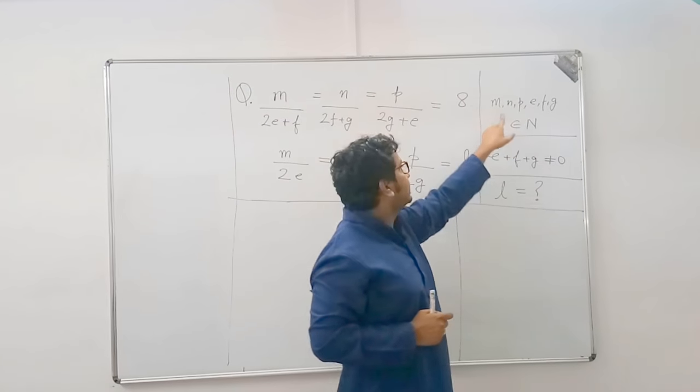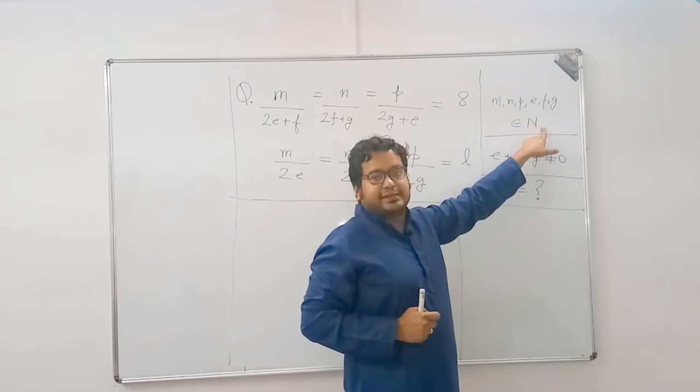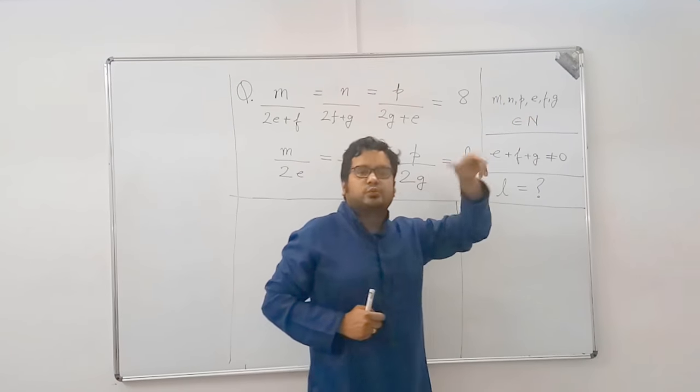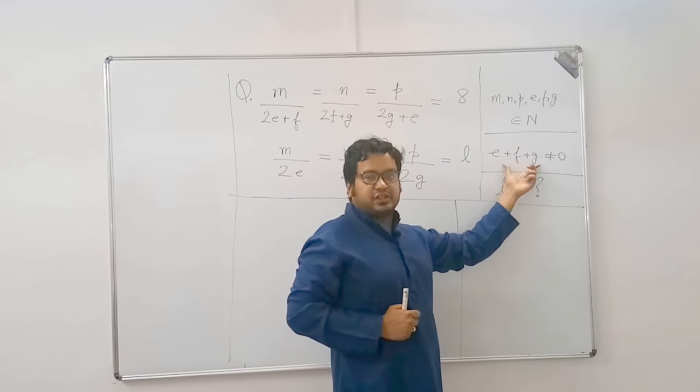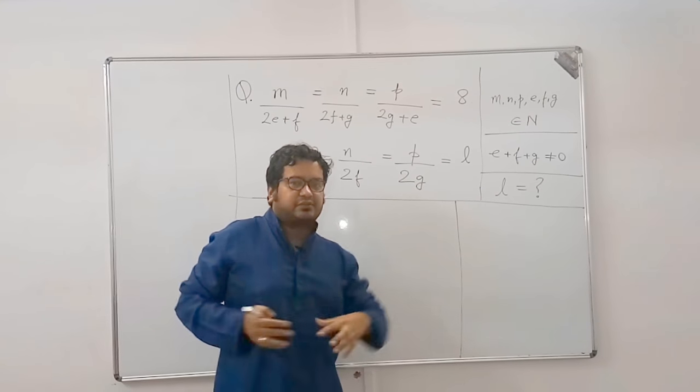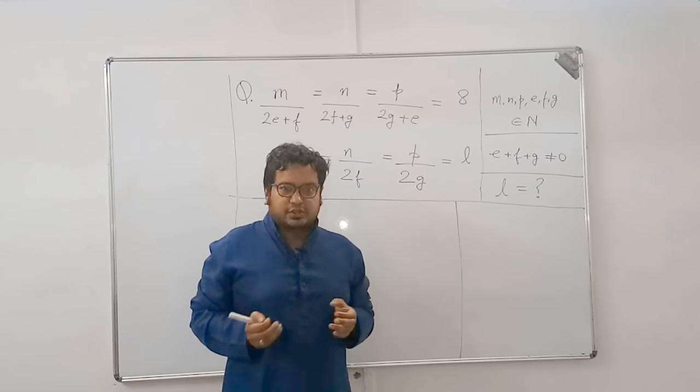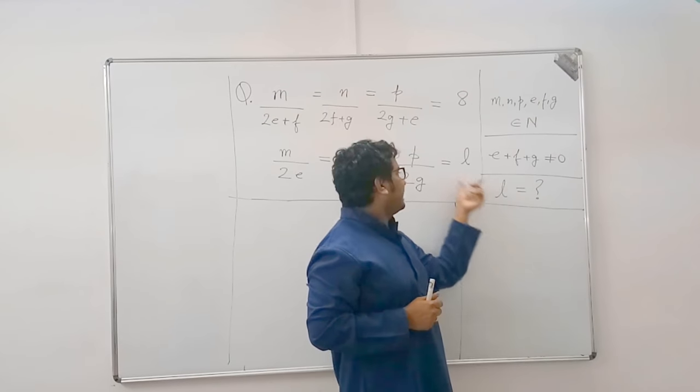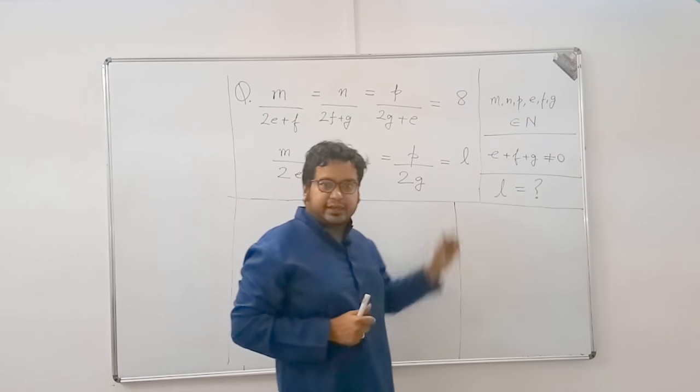First the conditions. All these belong to natural numbers which means 1, 2, 3 and so on. e, f, g the sum is not equal to 0. Definitely, this is a redundant condition. Sum of 3 natural numbers cannot be equal to 0. You need to find the value of n.